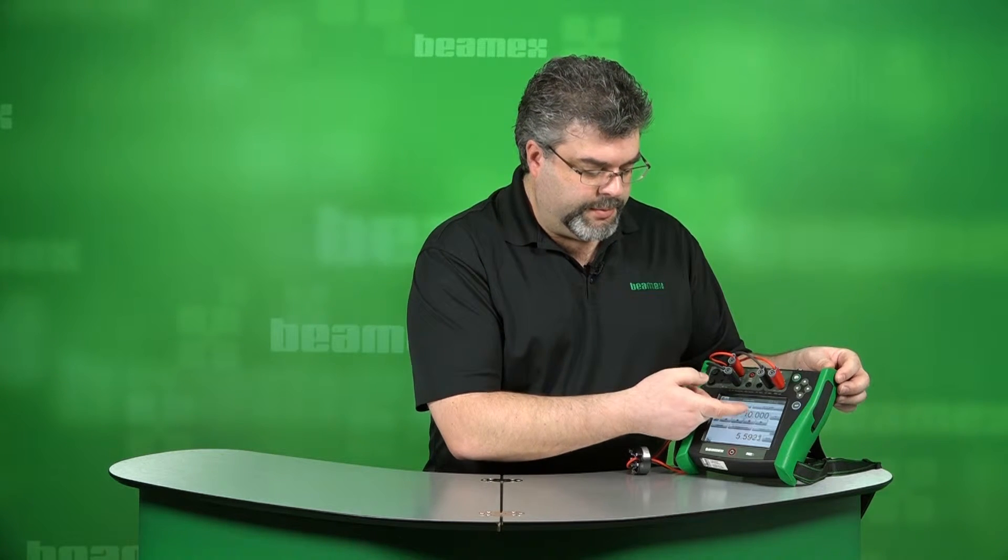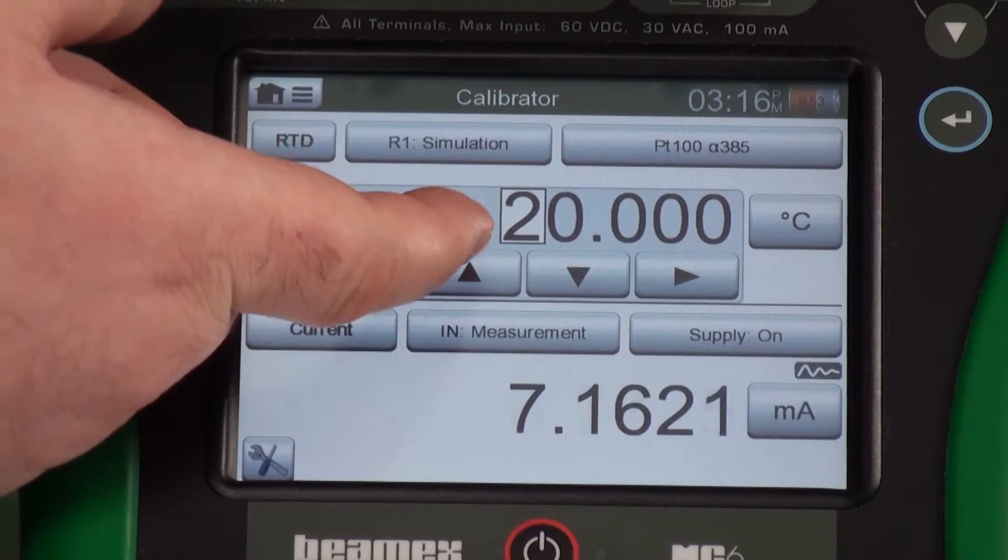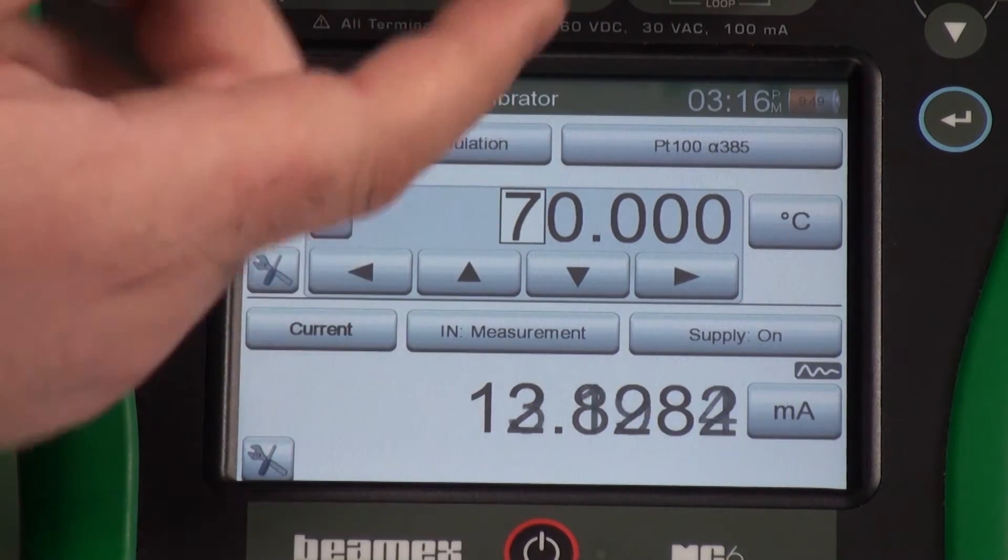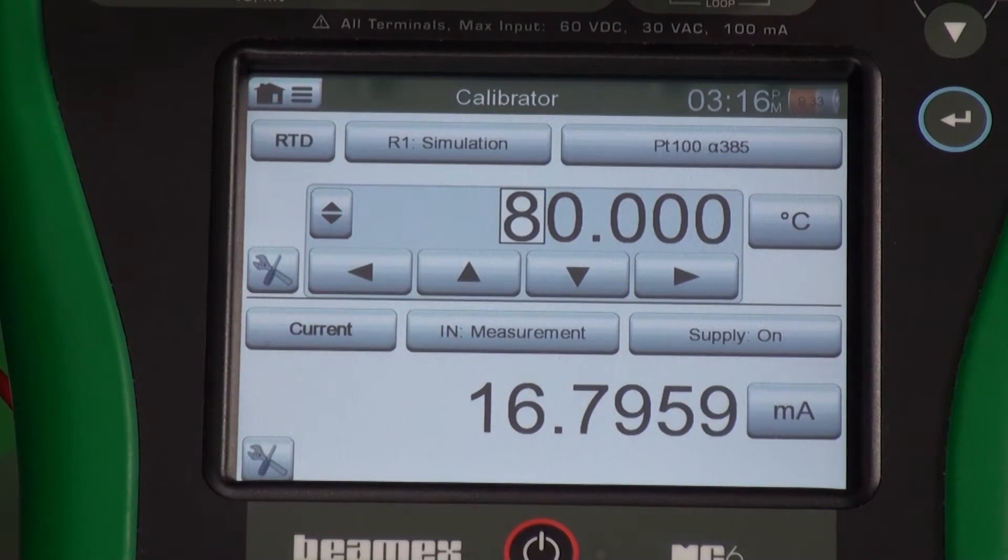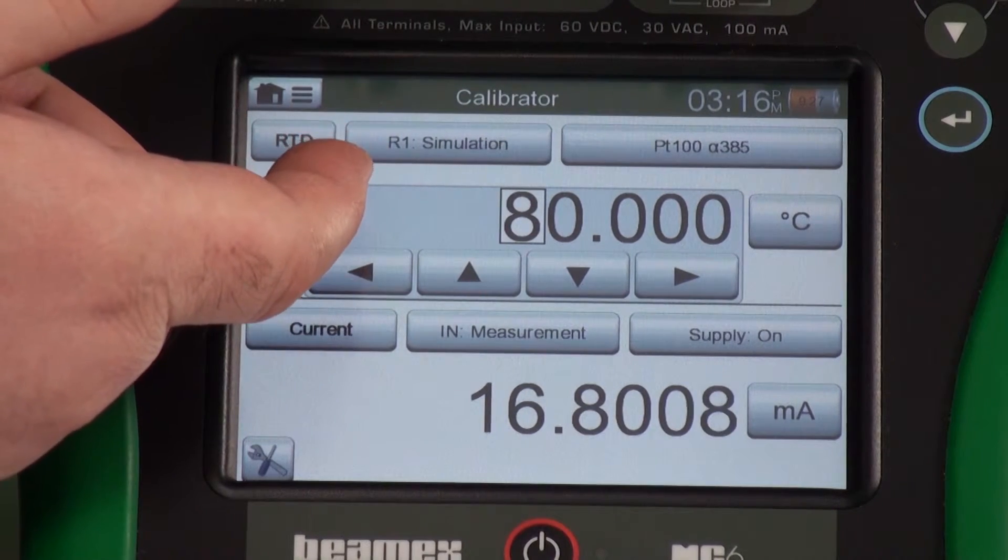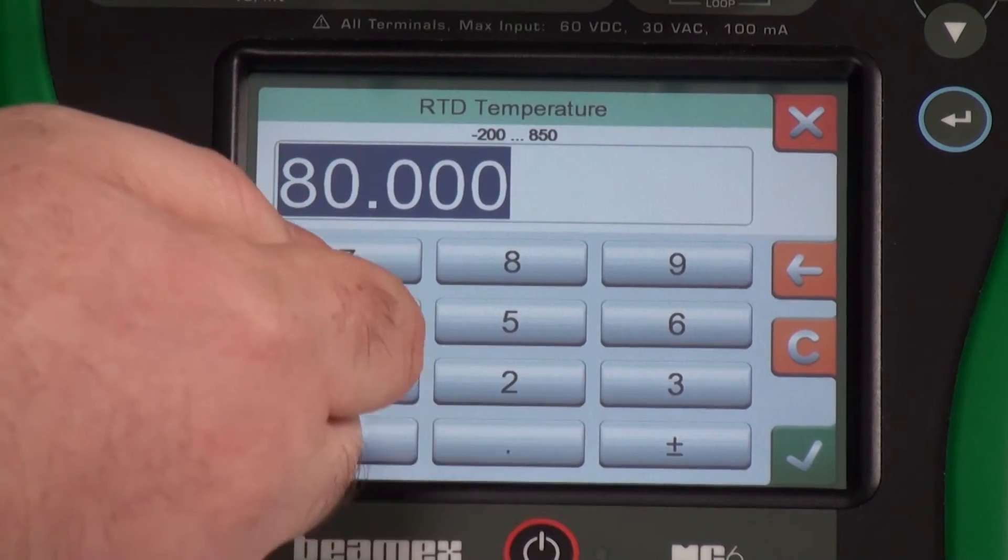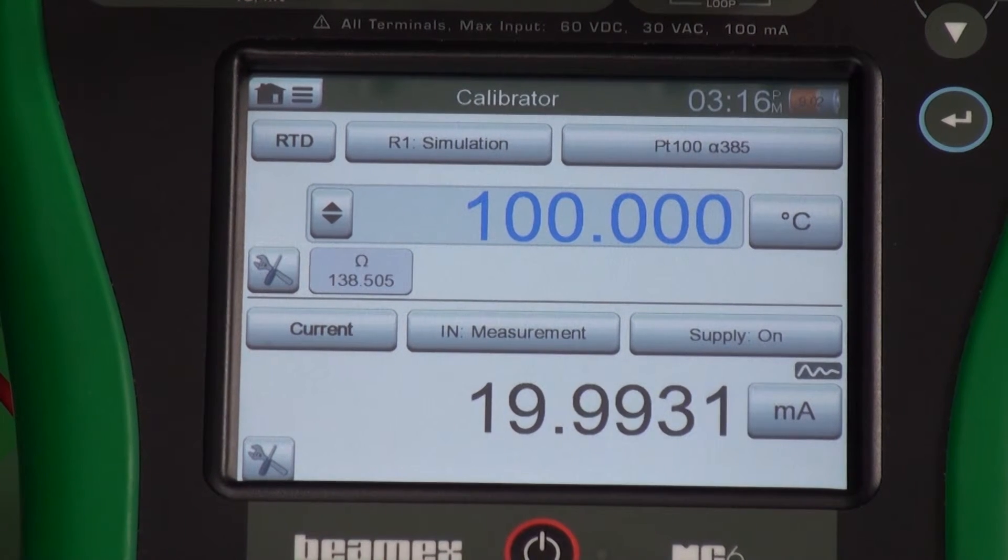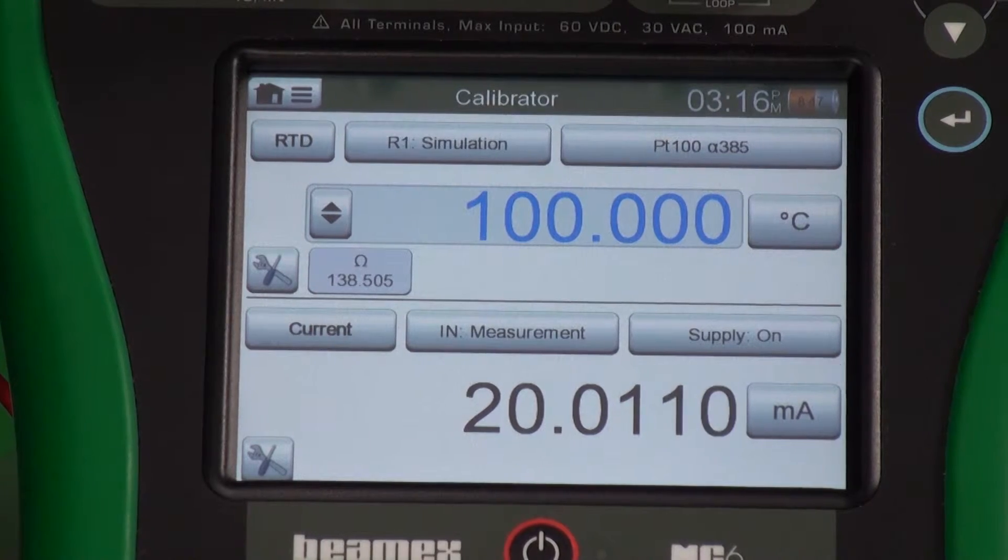I could use this. Let me move over and I'll just start increasing my temperature until I get 20 milliamps out. Now I could use this roller method or the nudge method or I could simply type in a value. Maybe I want 100. So now we've entered 100 degrees and we have 20 milliamps out. So now we know our range is 0 to 100.